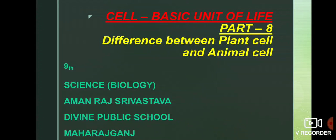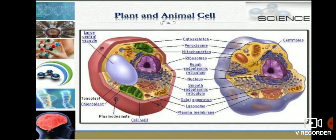Except blue-green algae and bacteria, all cells are eukaryotic. In this slide we discuss about plant and animal cell — both are eukaryotic cells. Now we will discuss some major differences between plant and animal cell one by one. In this diagram we can see the plant cell and animal cell.